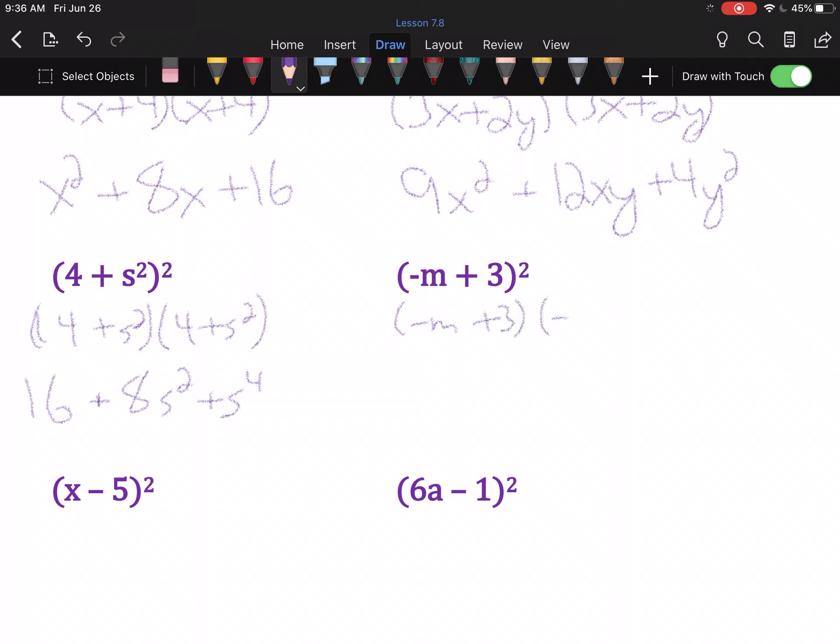(-m+3) times (-m+3). First, negative m times negative m is m². Outer and inner will be the same thing. So, they're both -3m. That means it's -6m when combined. And 3 and 3 make 9.